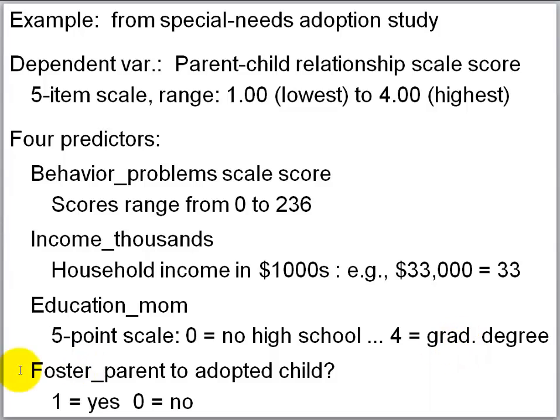The final variable is whether the adopting parent was previously a foster parent to the adopted child. If that was the case, this variable is coded as one; if not, it is coded as zero.